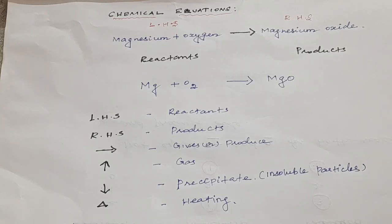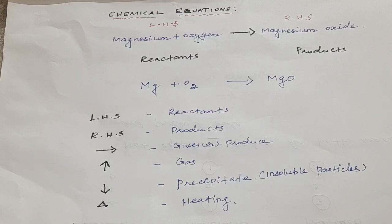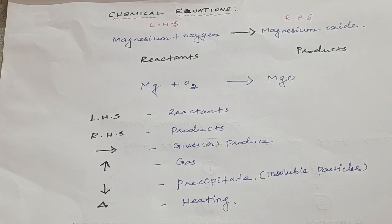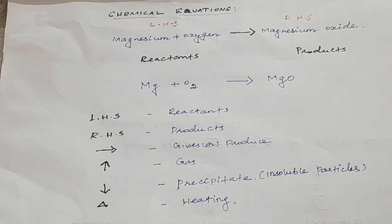The next heading is chemical equations. What is meant by a chemical equation? After completing the chemical reaction, we write the reactants and products. We represent this by a word equation. For example, magnesium ribbon burnt in oxygen gets converted to magnesium oxide. This description in sentence form is quite long, so it can be written in a shorter form — magnesium plus oxygen produces magnesium oxide. This is a word equation.